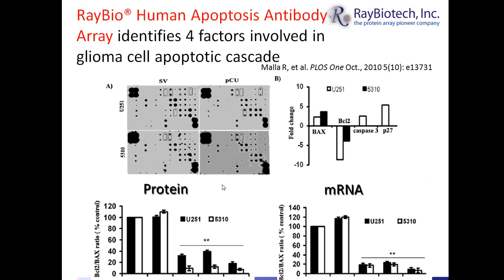This is a membrane-based array. Using the scrambled vector and the two transformed cell lines transiently transfected with the siRNA plasmid knocking down cathepsin V and UPAR, vast differences in the expression of various apoptotic markers were observed. Some markers went up in regulation, others went down. Key biomarkers identified as playing a role include Bax, BCL-2, caspase-3, and P27.